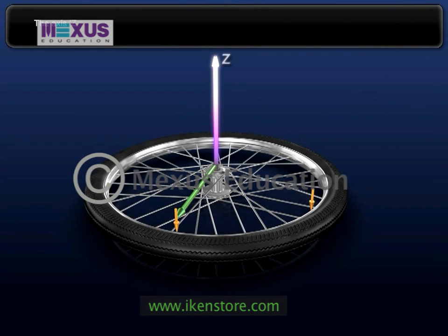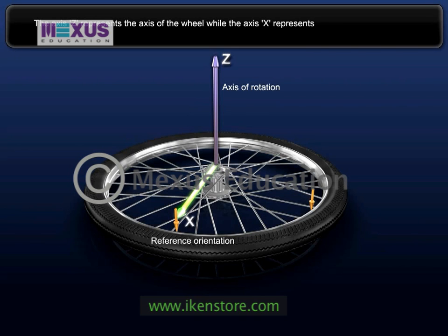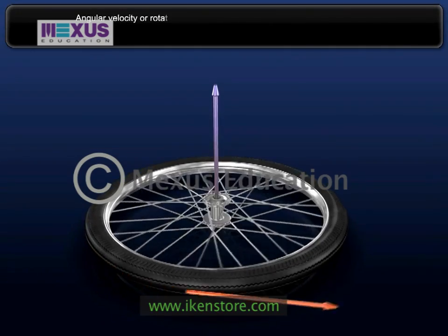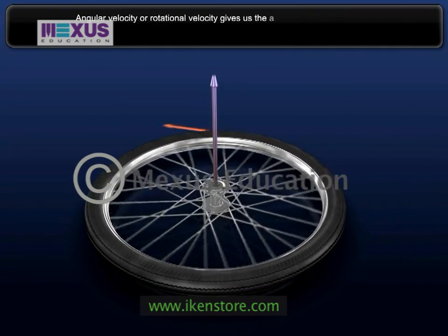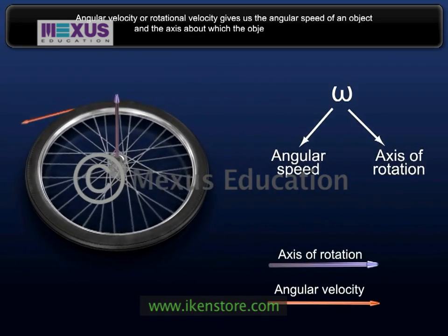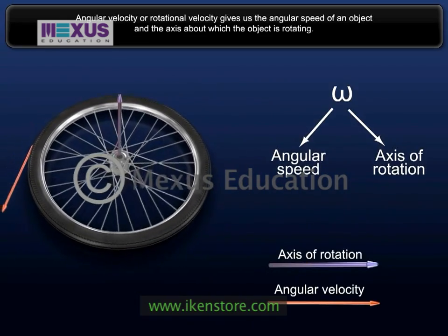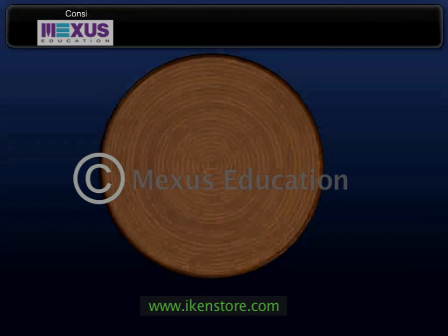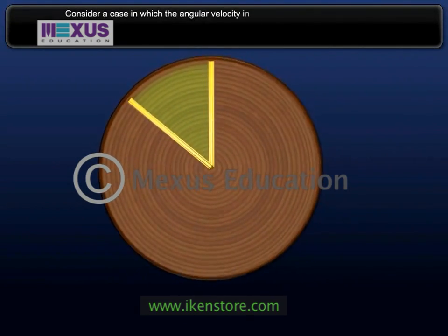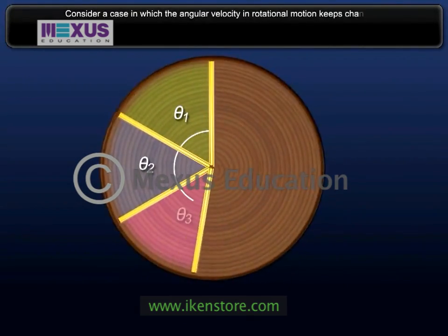The axis Z represents the axis of the wheel while the axis X represents the reference orientation. Angular velocity, or rotational velocity, gives us the angular speed of an object and the axis about which the object is rotating. Consider a case in which the angular velocity in rotational motion keeps changing.